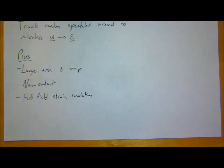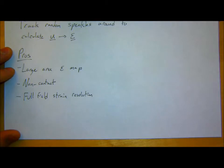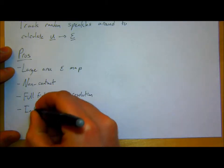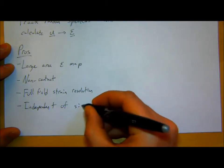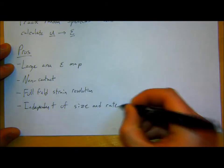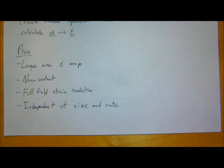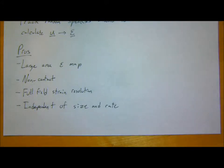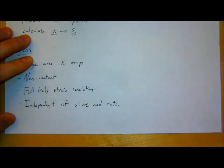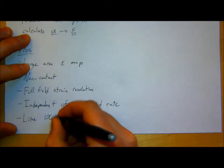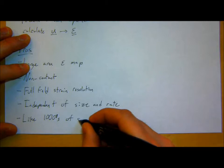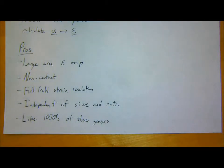It's independent of specimen size and loading rate. You can do something on the micro scale and something on the macro scale. You could image a whole wind turbine blade or a micro pillar, so long as you have some method for getting a speckle pattern on there. In terms of rate, it doesn't matter if it's fast or slow strain rate, so long as you have a camera fast enough to capture images. This is like thousands of strain gauges — at every point you can figure out what the strain is without physically applying gauges.